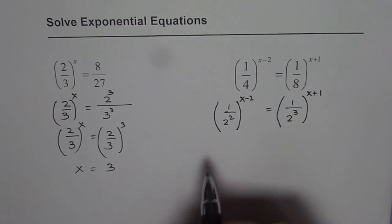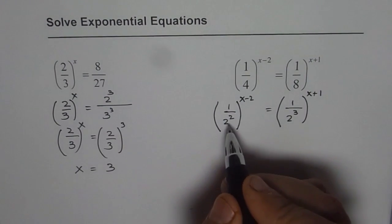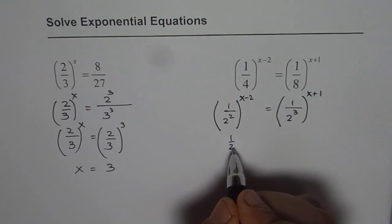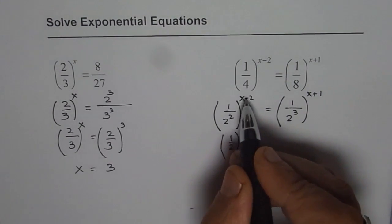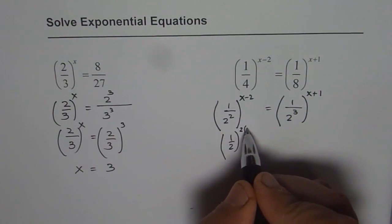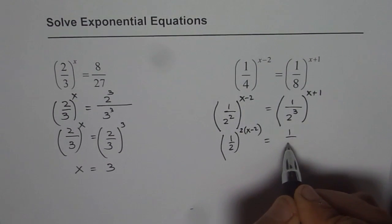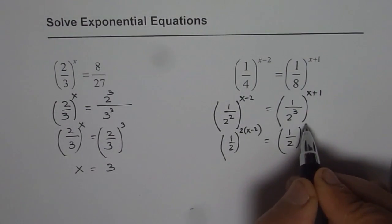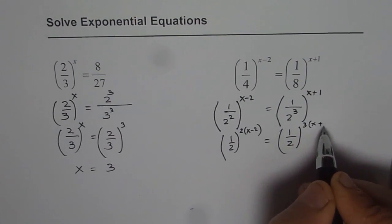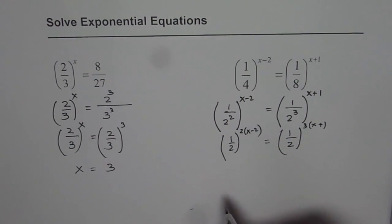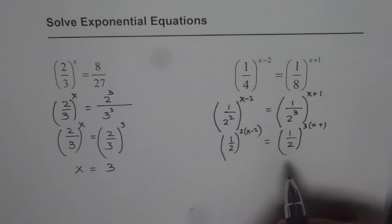Now, we have same base, almost correct. Let's write this with the base of half. What do we get? We get 2 times x minus 2 and on the right side, we get 3 times x plus 1. These are the linear equations which we need to solve to get the answer.